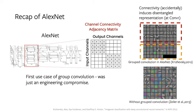In AlexNet, as an engineering compromise, because Alex could not train his network on one single GPU at that time, he split the channels into two parts and trained them individually on each GPU, which yields a grouped connectivity pattern. What's interesting is that without imposing any constraints, the two groups learn disentangled representations. This coincidentally confirms what was claimed in the LeNet paper and suggests that connectivity really matters for representation learning.